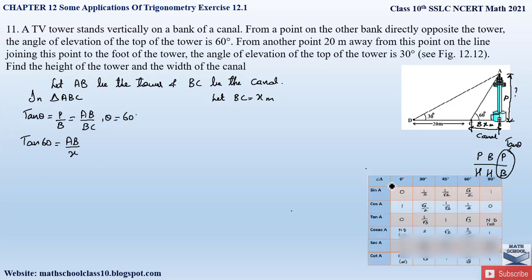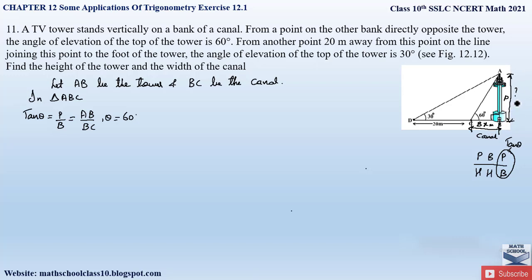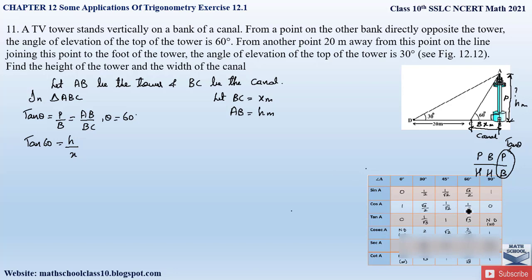From the trigonometric table, tan 60° = √3. Let us also take the height of the tower AB to be h meters. So let BC = x meters and AB = h meters. Substituting: tan 60° = AB / BC gives √3 = h / x, therefore h = √3·x.